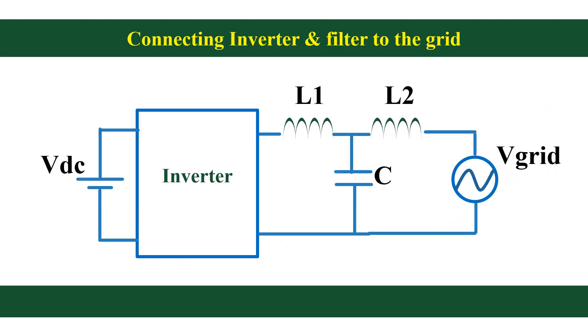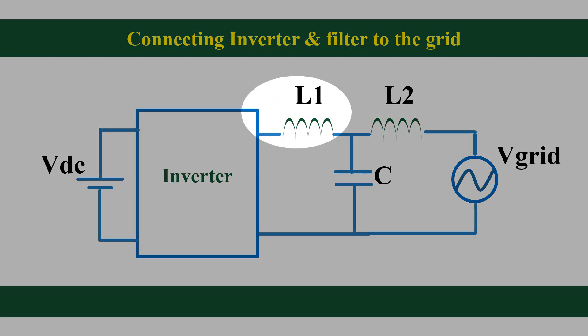This is how we connect the filter with inverter and grid. L1 is the inverter side inductor, and L2 is the grid side inductor.